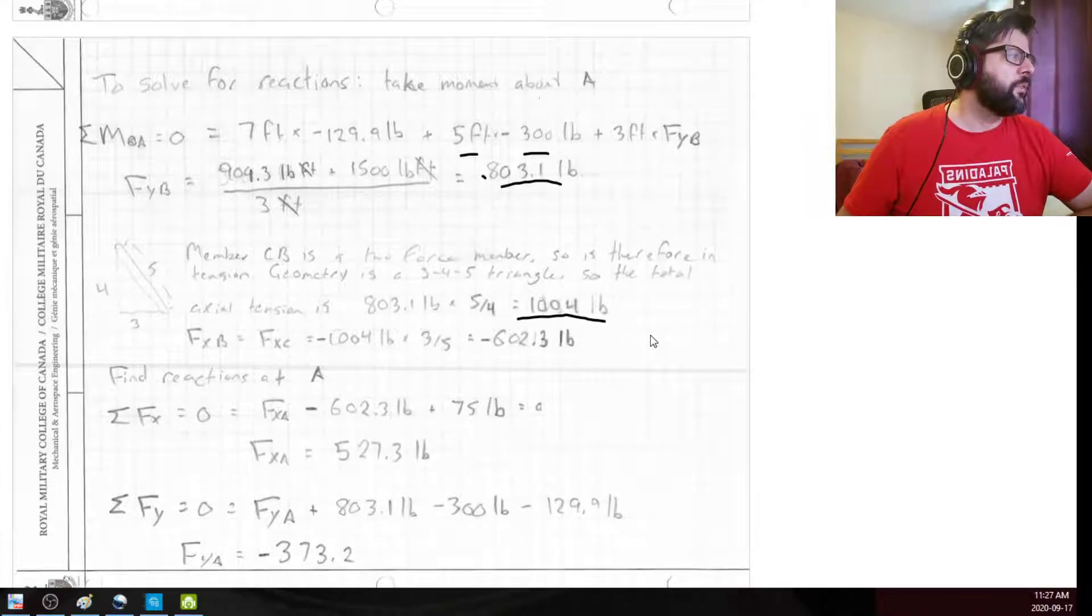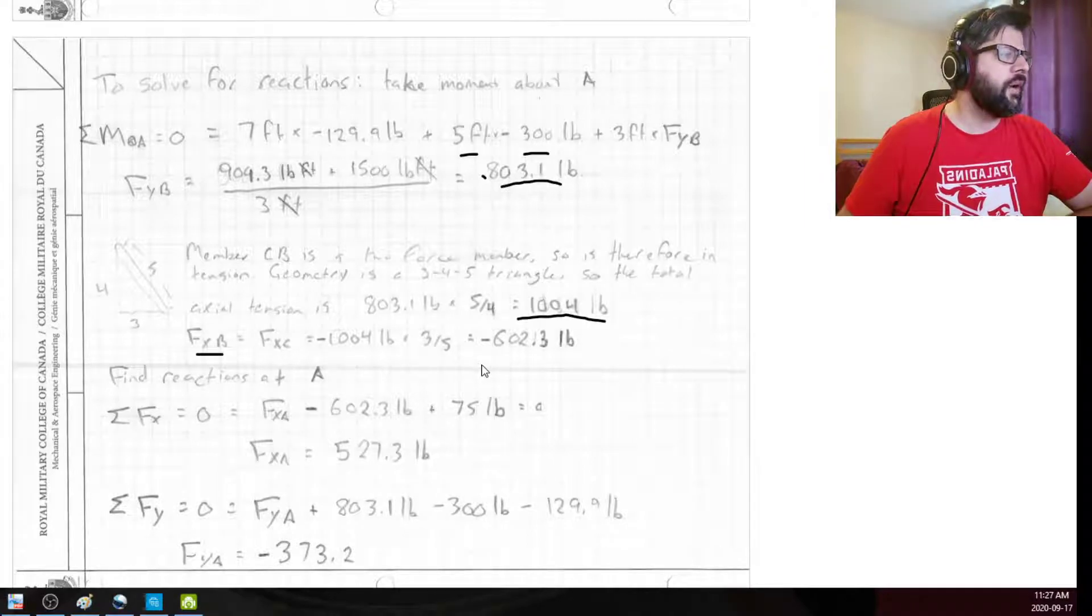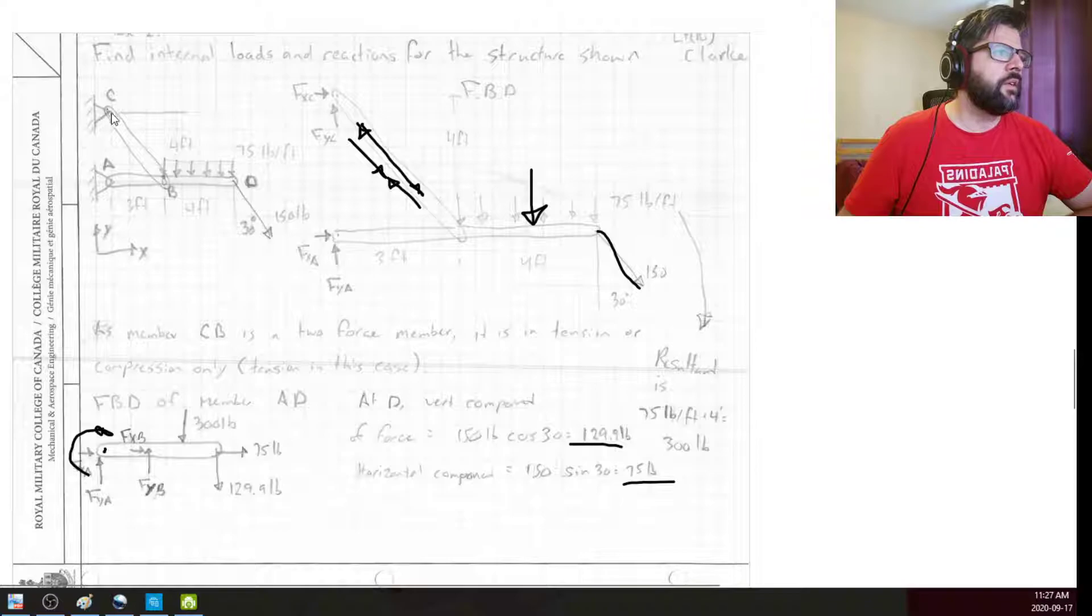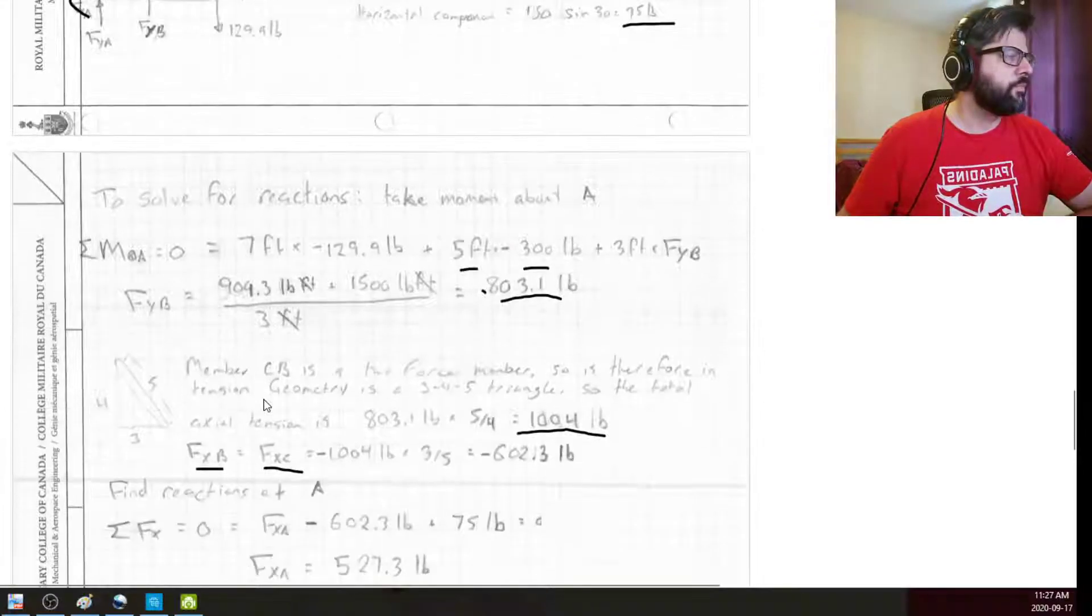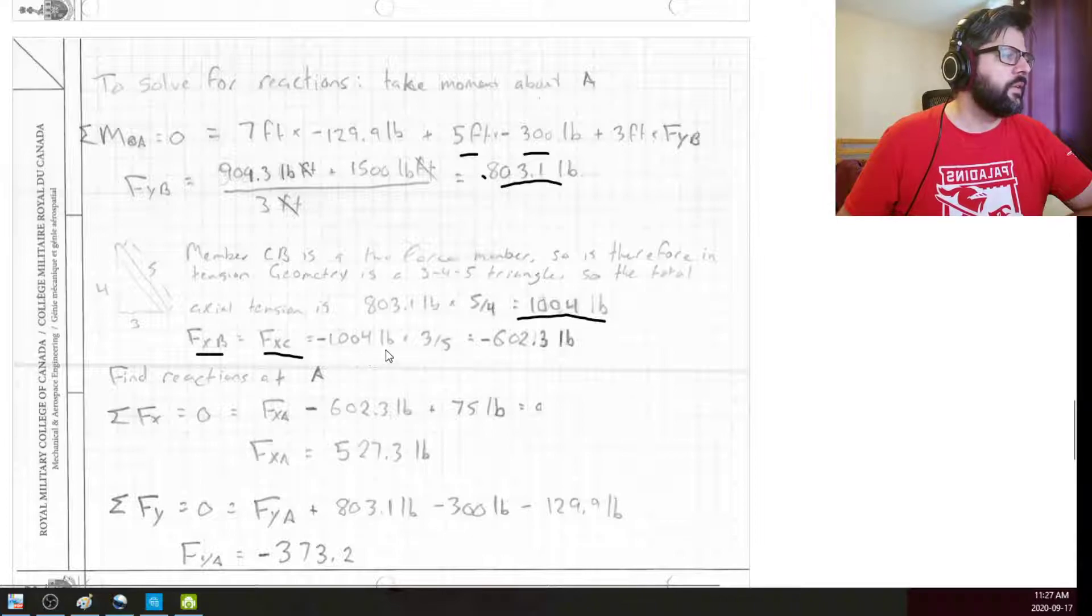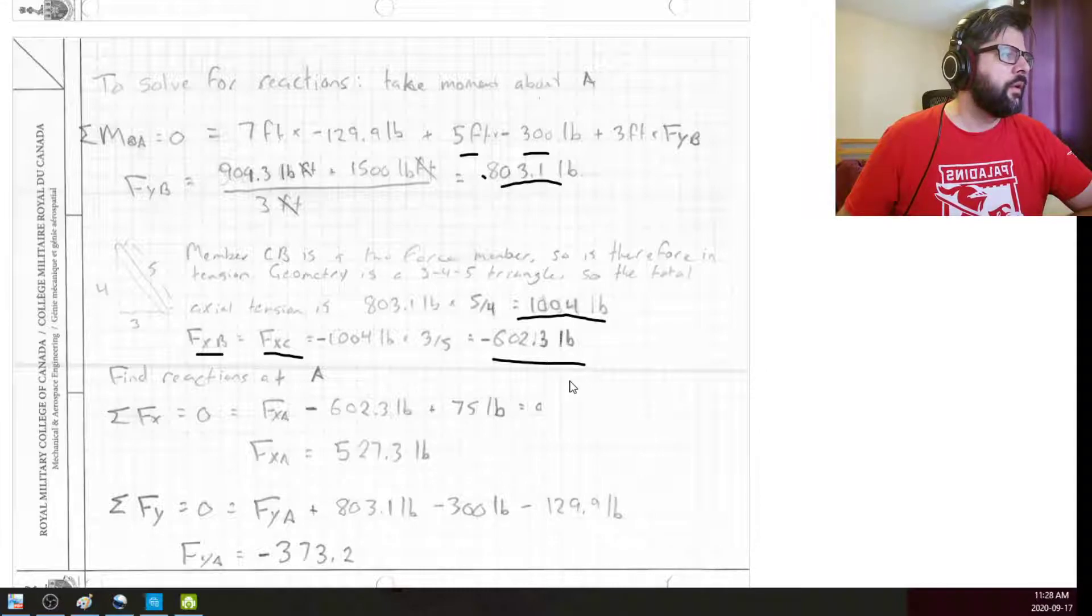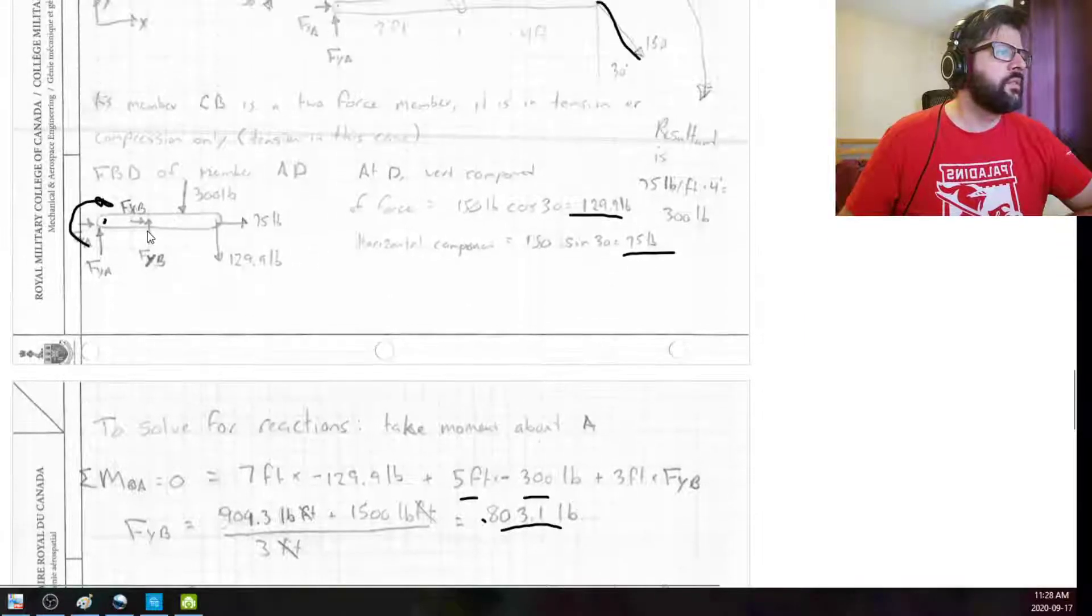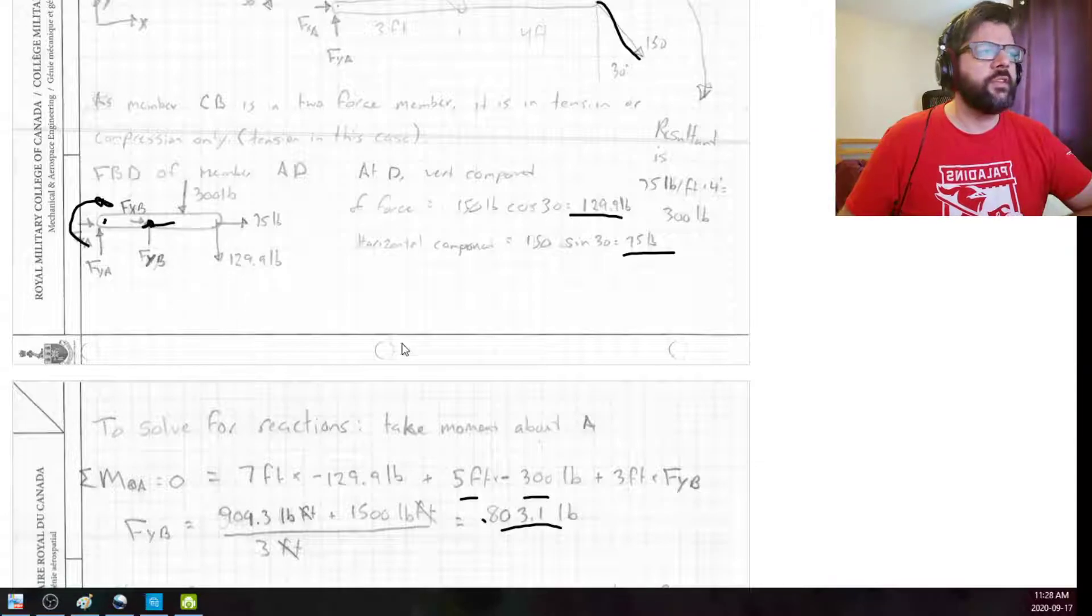And we can solve for the X component of that force, which is also going to be the same as the X component at the reaction here. That'll be 602.3, but that'll be in the negative direction. Again, because this force here, it's actually going to be acting in this direction. So that'll be negative.